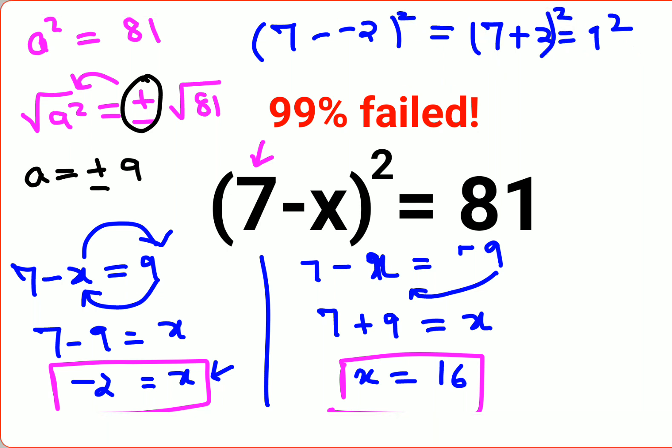And then we had 7 minus 16 the whole square, so that gets you minus 9 the whole square, that gets you 81. So we can say the value of x is either minus 2 or 16. I hope this is very clear to everyone. That's it for today, I will see you in the next video.